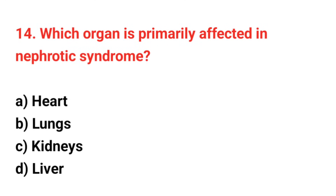Question number 14: Which organ is primarily affected in nephrotic syndrome? The right answer is option C: Kidney.